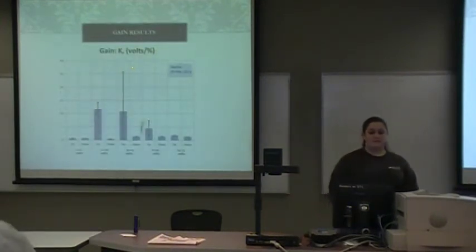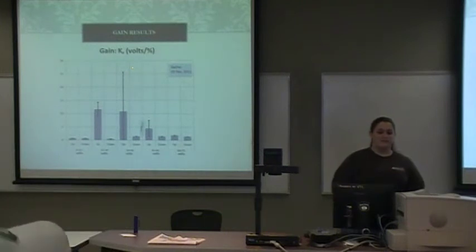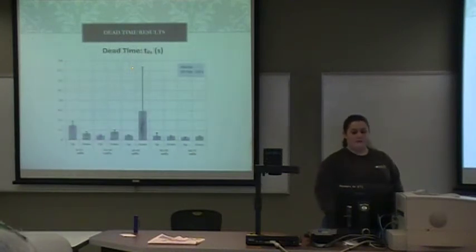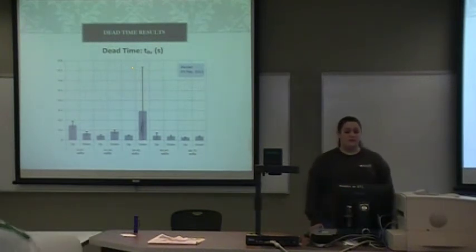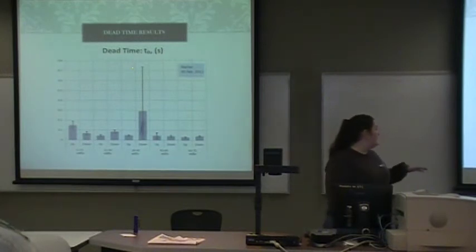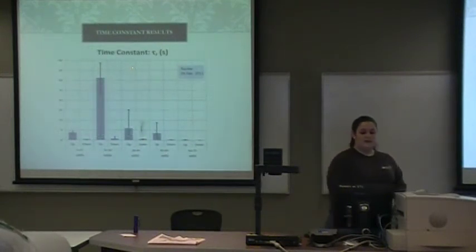These are the results when you compare all of our data. Some of them have a lot of uncertainty, and others have very little — we're not really sure exactly why. Most of the dead time and tau values are pretty well-defined with low uncertainty.